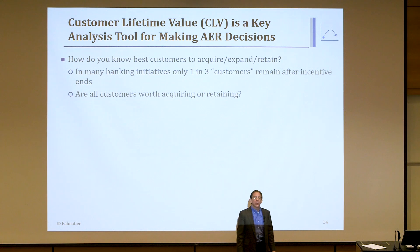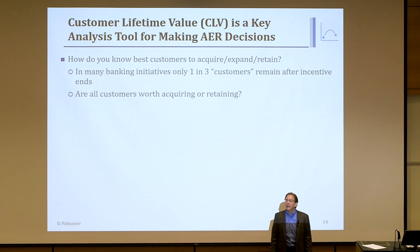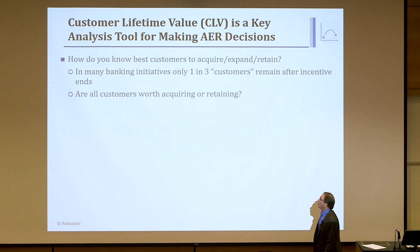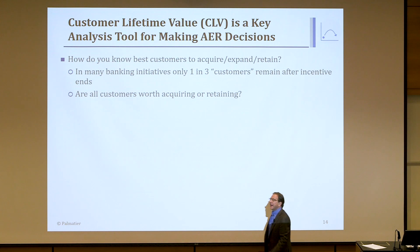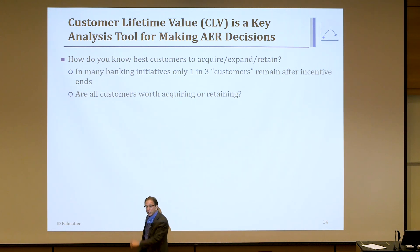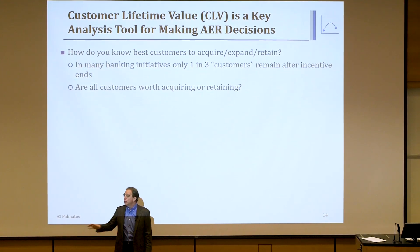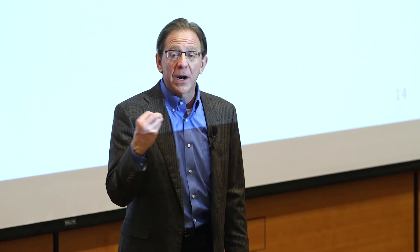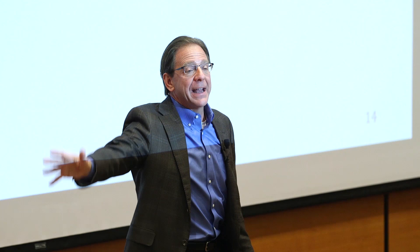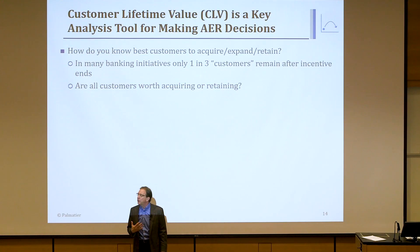One of the worst ways to acquire customers is to put a sale sign out — the only customers you get are price-sensitive. On the retention side, if I tell you to retain 96% of customers every year, you'll treat all customers equally and try to retain them — even the ones you're losing money on. You don't want to do that. You want to retain customers based on CLV value: work very hard to retain those with super high CLV, and if customers with negative CLV leave, don't be too bothered by it. CLV allows you to make good decisions.